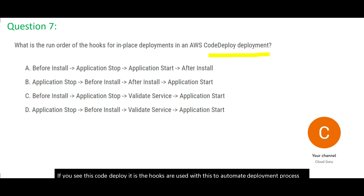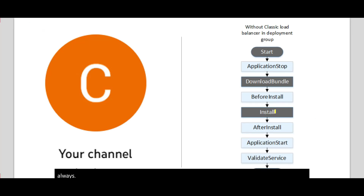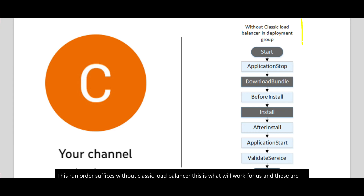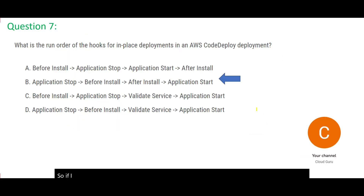Now out of these, the question is asking what is the run order. The run order is always as shown — and there is no logic to it. We are assuming without the classic load balancer because with classic load balancer the run order is different. We do not use classic load balancer nowadays; it is obsolete. The steps are: stop the application, download the bundle, before install, install, after install, start the application, then validate the service. Based on that run order, option B is the right answer.